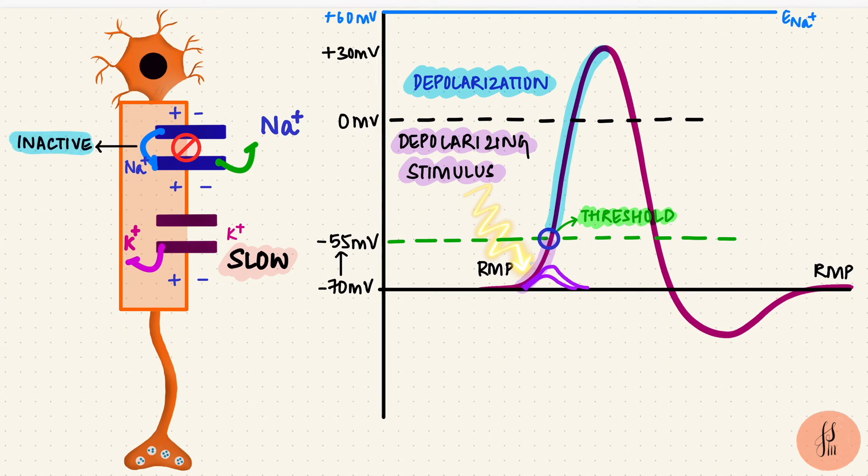How does potassium move? It leaves the cell, trying to bring the membrane potential close to its equilibrium potential, which is around negative 90 mV. So the membrane potential is becoming more negative again. This is the downstroke, repolarization. Now the membrane is more permeable to potassium than sodium.